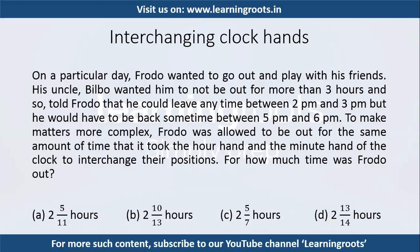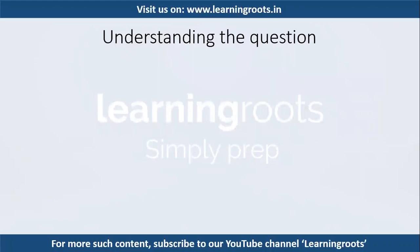The question looks extremely complicated because it has very limited information. They have just said that the hour hand will be between 2 pm and 3 pm and the minute hand will be between 5 pm and 6 pm to start with, and then they will interchange their positions. We have to figure out for how much time Frodo was out. You can pause this video and try it on your own, or go through the solution which will help you solve any question of this form.